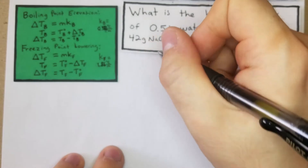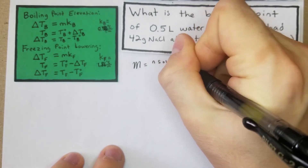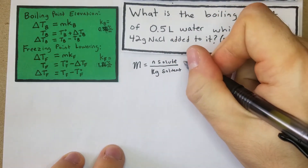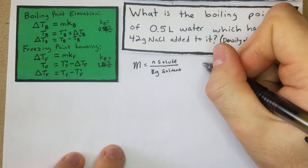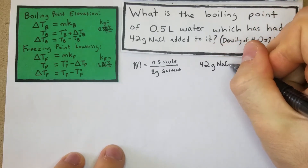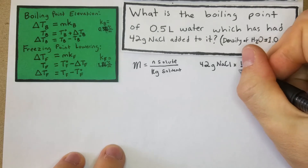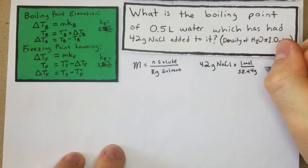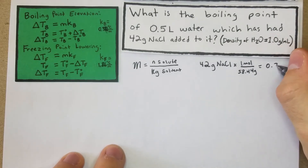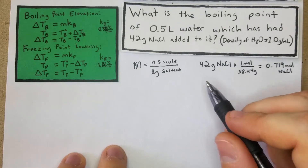Just like the last problem, we first figure out the molality. We need moles of solute per kg of solvent. For the moles of solute: 42 grams of NaCl times one mole per 58.44 grams — we divide 42 by 58.44 and get 0.719 moles of NaCl.